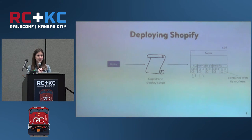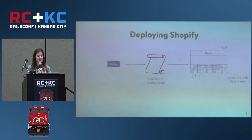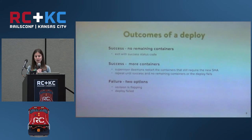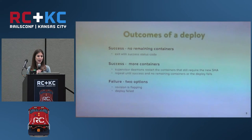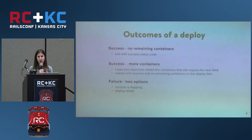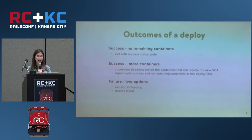The green outline and solid arrow indicates a deploy has finished on that container, whereas a dashed arrow means we're switching revisions on that container. Another responsibility the supervisor daemons have is to check the exit status of the deploy — there are three different statuses. You can get a success exit code with no more remaining containers, meaning your entire deploy is successful. Or you get a success exit code but there are still more containers, so you continue restarting containers that still require the new SHA, repeating until each container has switched to the new revision.